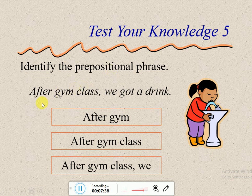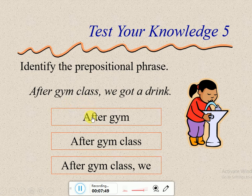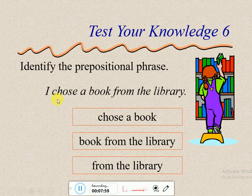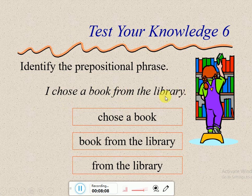Next example: 'After gym class, we got a drink.' The preposition is 'after,' and 'gym class' is the object of the preposition — الاسم المجرور. So 'after gym class' is the prepositional phrase. Another example: 'I chose a book from the library.' The preposition is 'from,' and 'the library' is the noun — الاسم. So 'from the library' is the prepositional phrase.